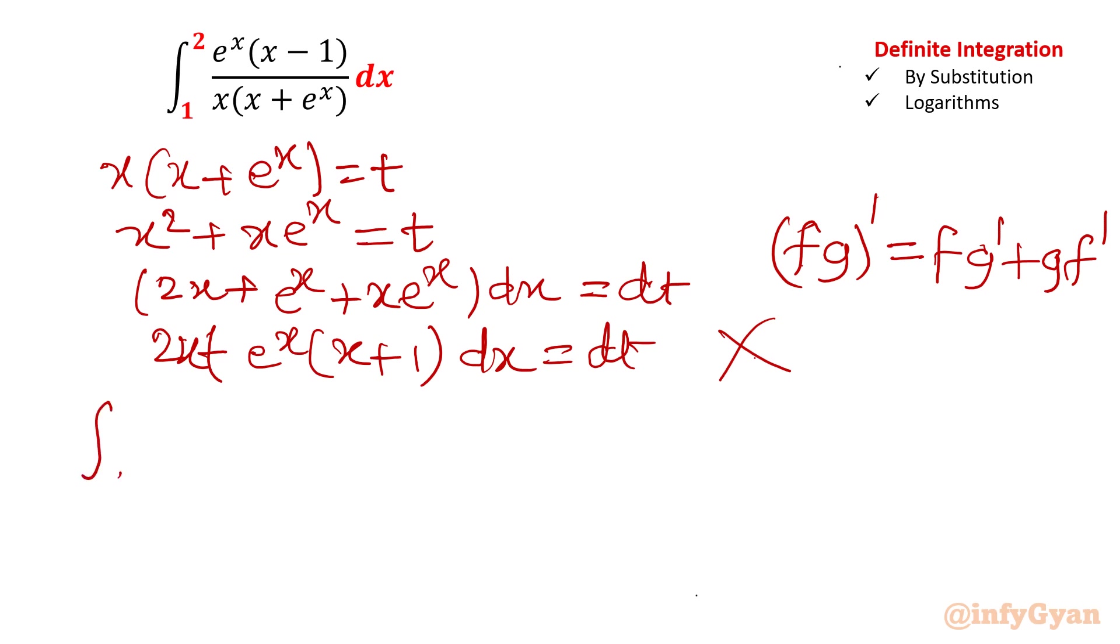So 1 to 2, e raised to the power x, x minus 1 over x square. This is our numerator divided by and this is complete integration divided by x, x plus e raised to the power x over x square. This is our denominator dx.